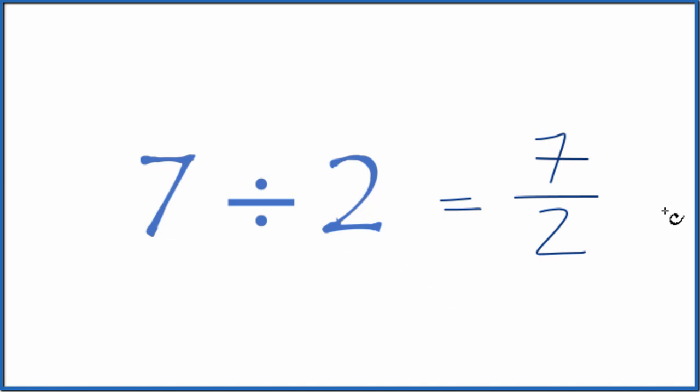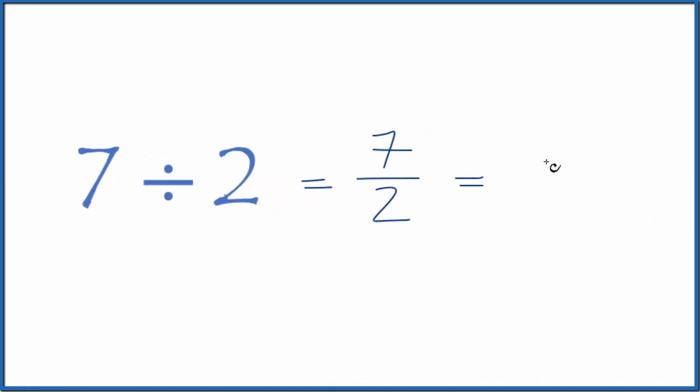You could also just divide 7 by 2 on your calculator. You end up with 3.5. So 7 divided by 2 is equal to the fraction 7 over 2, or 3.5, the decimal.